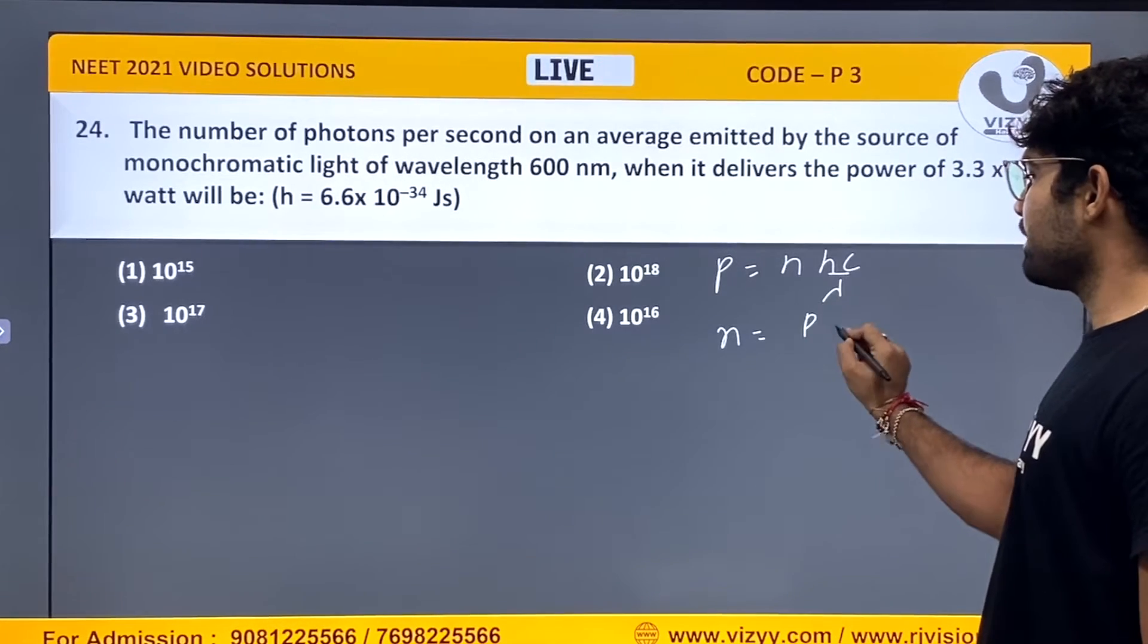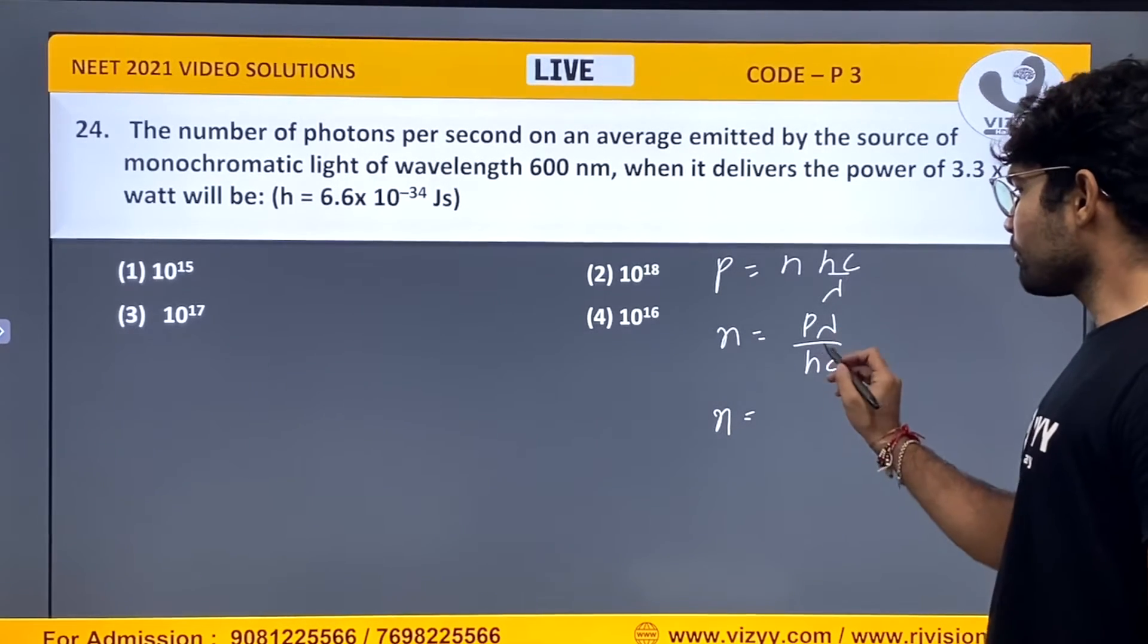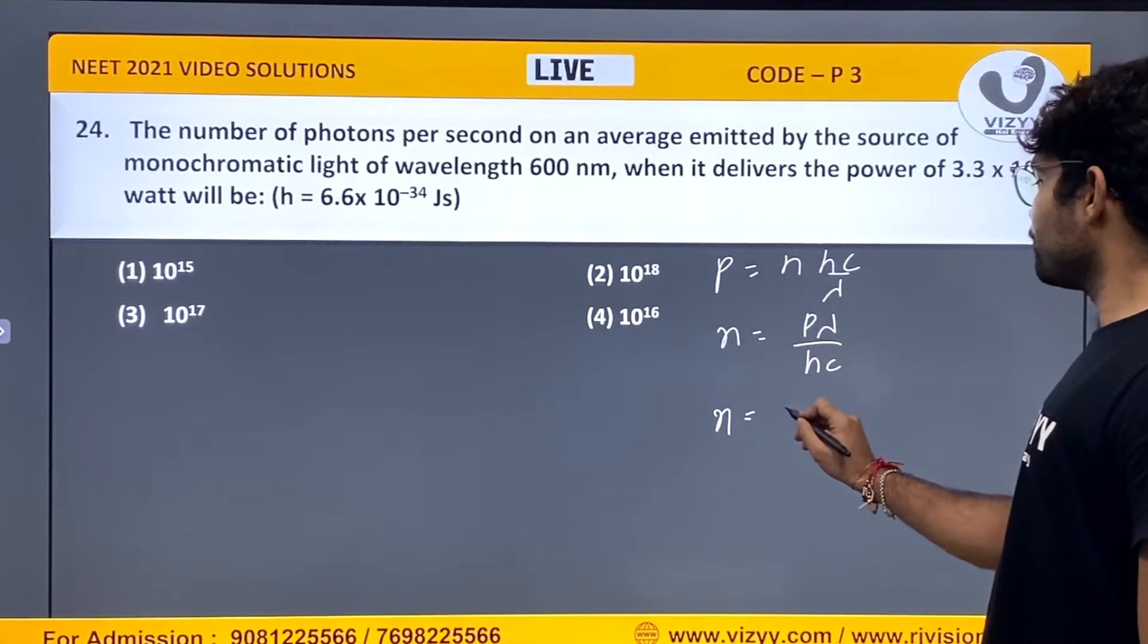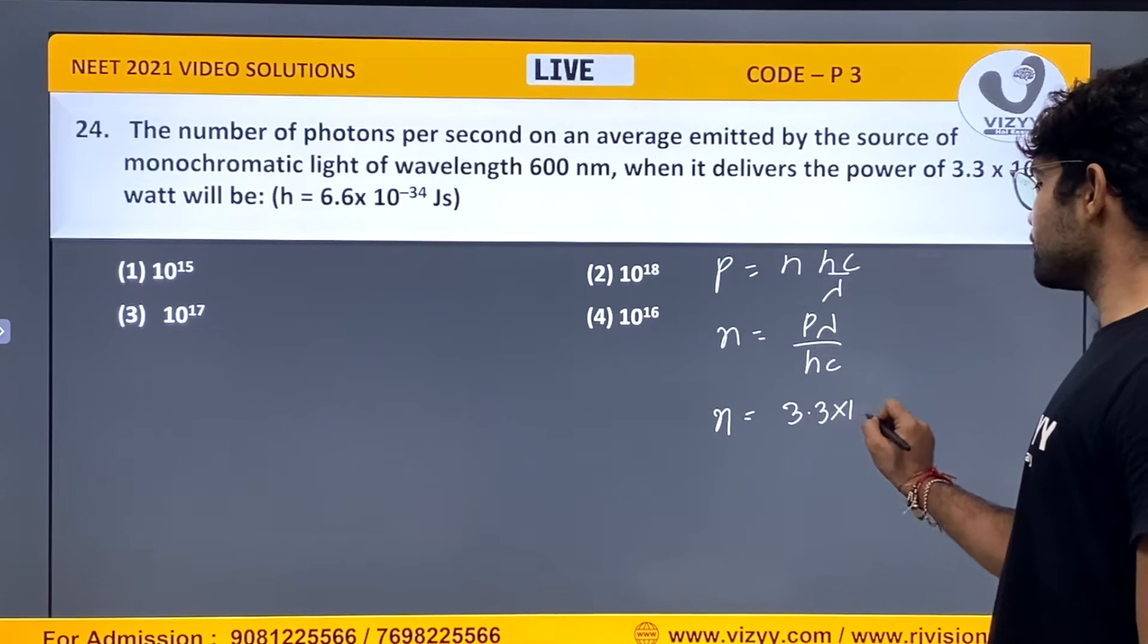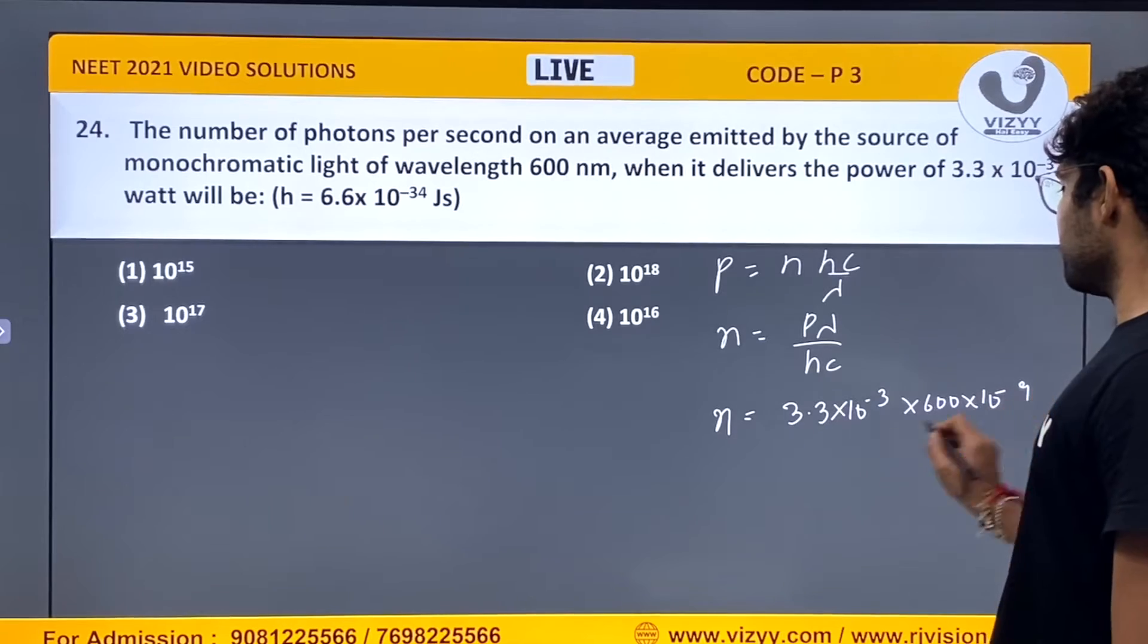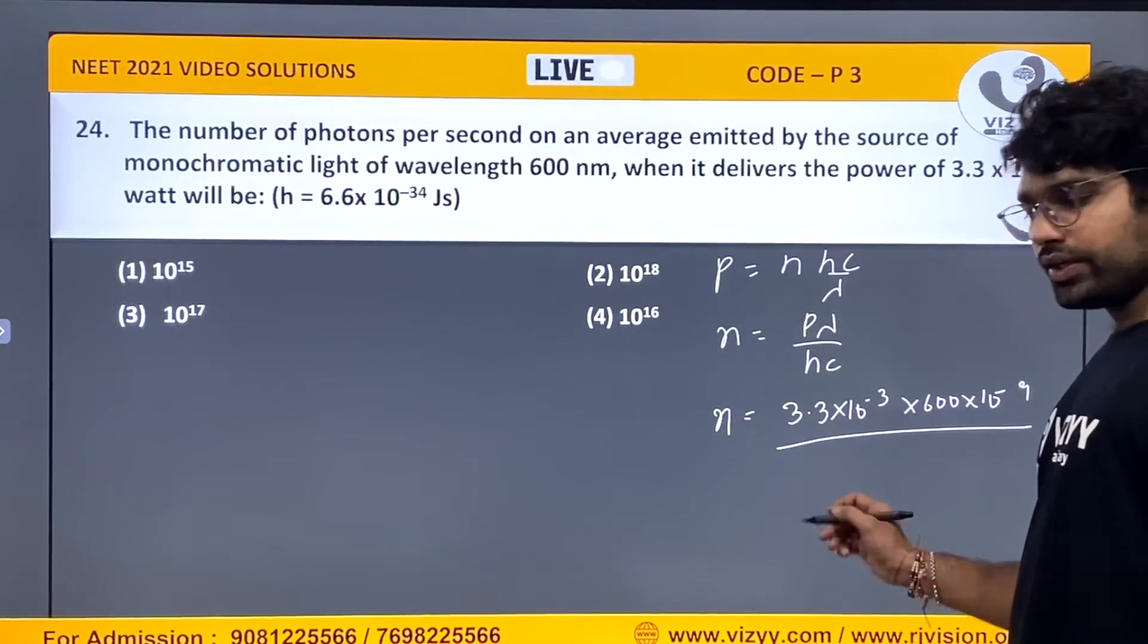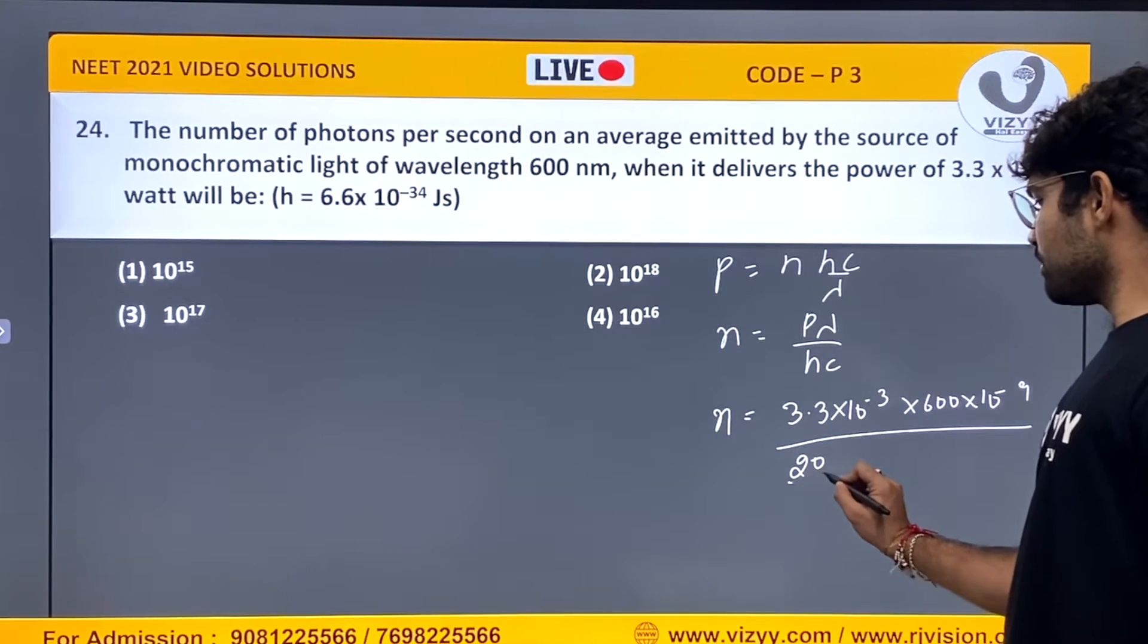P equals N hc by lambda. So N equals P lambda upon hc. N equals, power is given 3.3 into 10 to the power minus 3, lambda is given 600 into 10 to the power minus 9 divided by hc. I am writing the value of hc as 20 by 3.